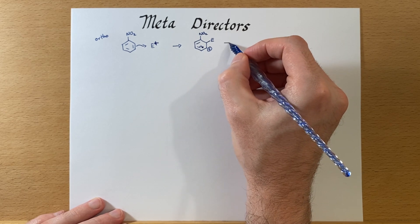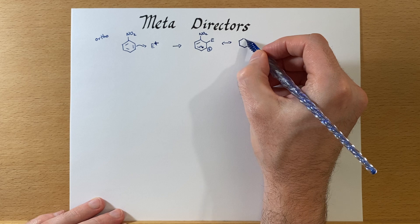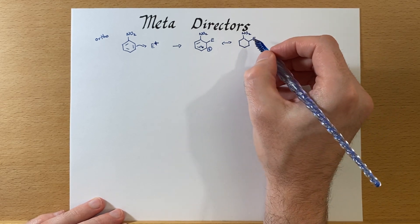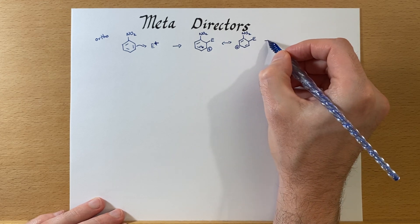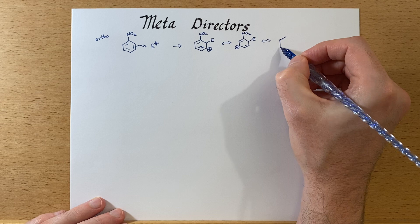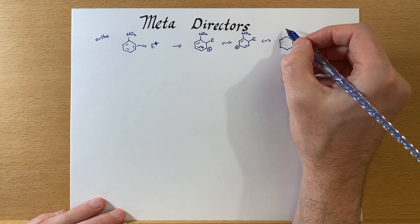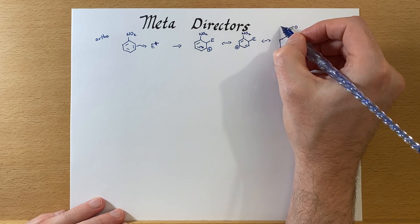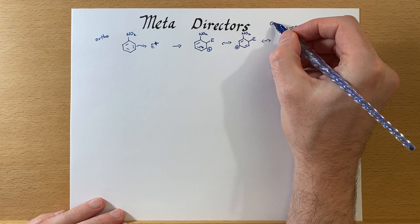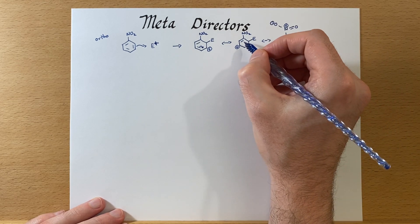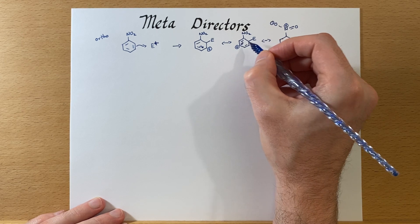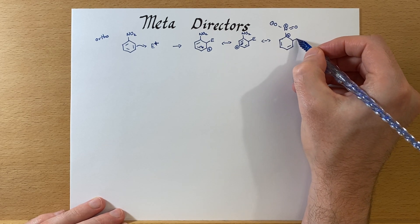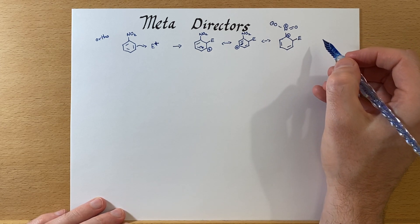We're going to have to draw quite a few resonance structures to explain this. Now this is the most important one to look at out of this bunch, so I'm going to expand out what this looks like. If we were to transition these electrons down, we'll get a positive charge right here on that carbon — and hopefully you can see the problem.